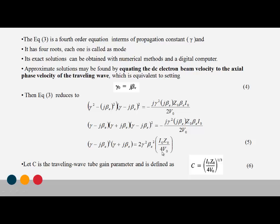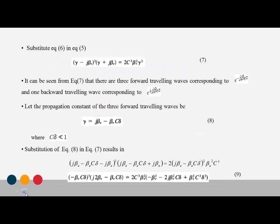In that expression, I-nought Z-nought divided by 4V-nought, raised to the power 1 by 3, is the traveling wave gain, referred to as C. Substituting the C value into equation 5 gives equation 6: gamma minus J beta-E, the whole cube, into gamma plus J beta-E, is equal to 2C cubed beta-E squared into gamma squared.